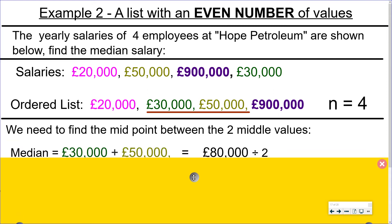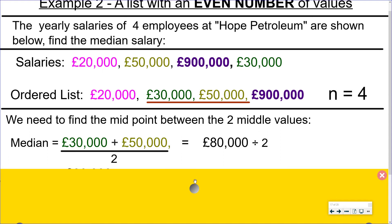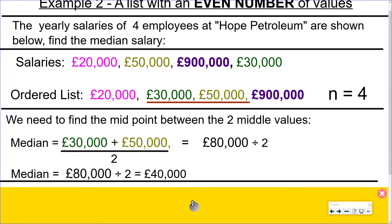And to do that we just add them up and divide by two. So we're essentially finding the mean of these two middle values, and if we add them up we get £80,000 which we have to divide by two. And if we do that we get the median as being £40,000.